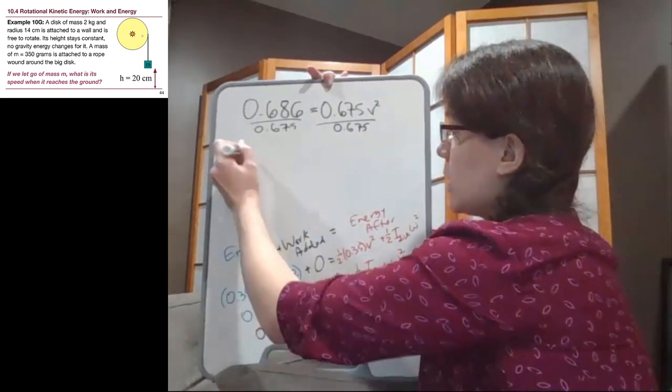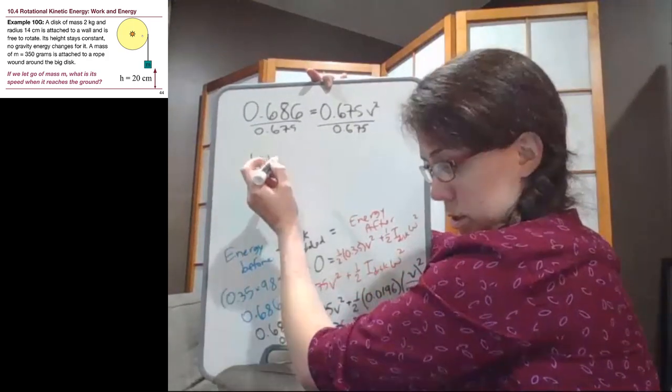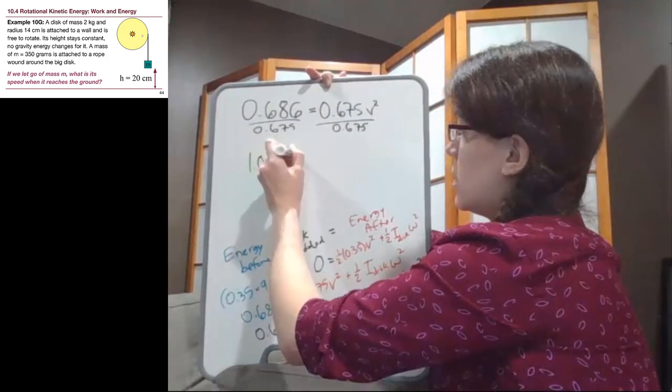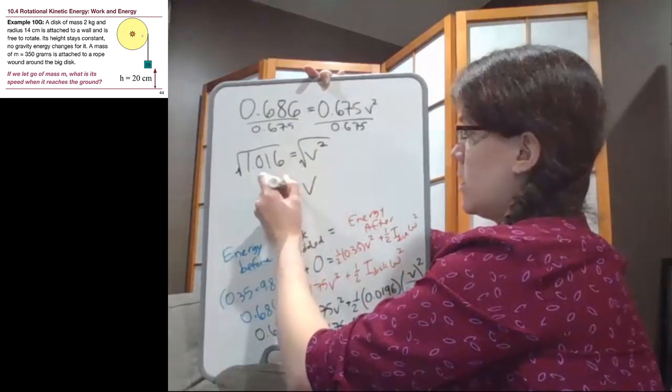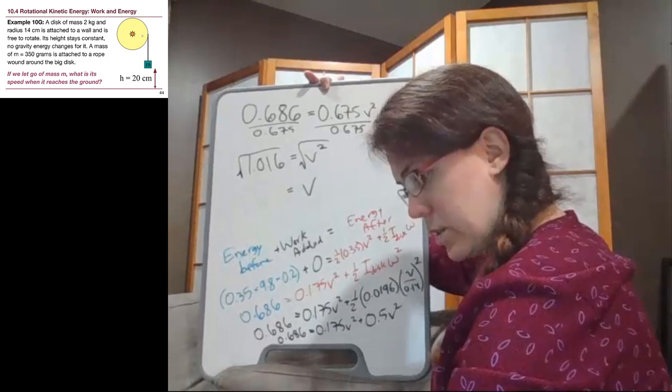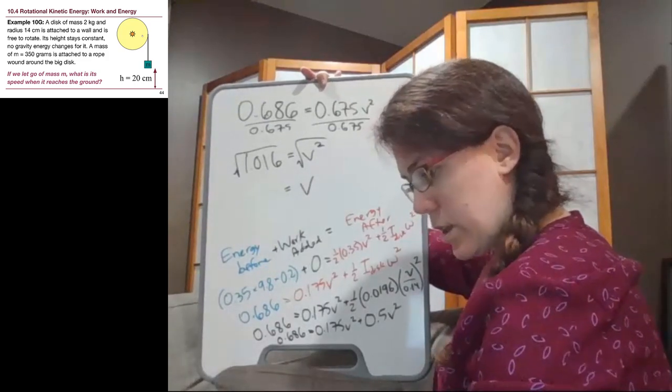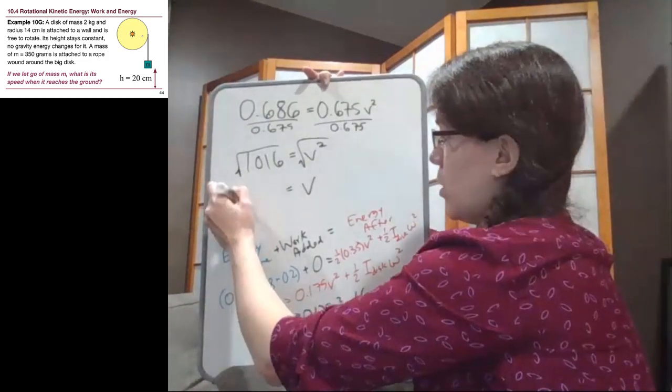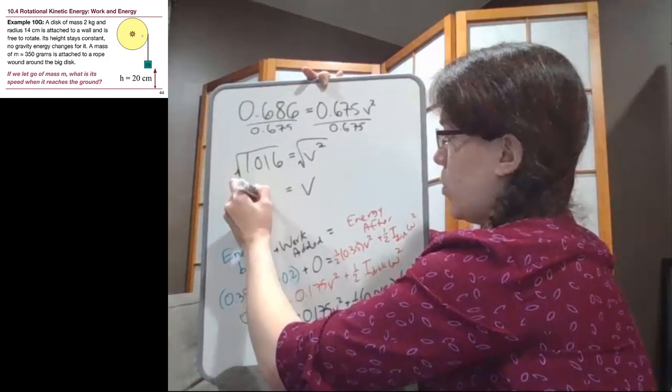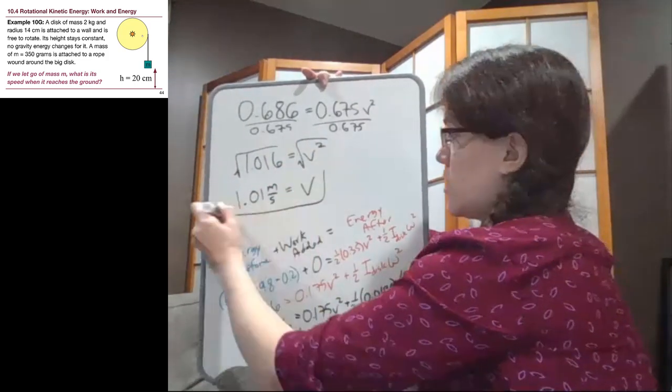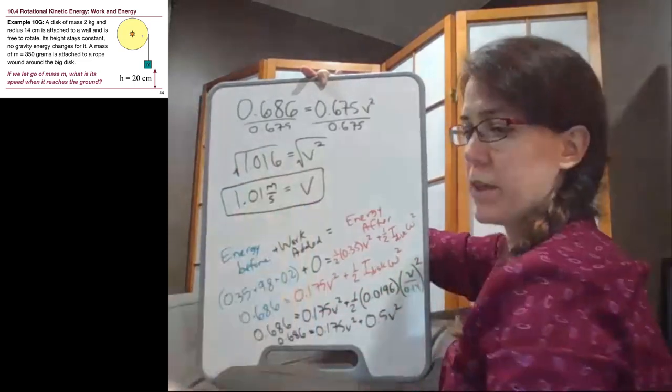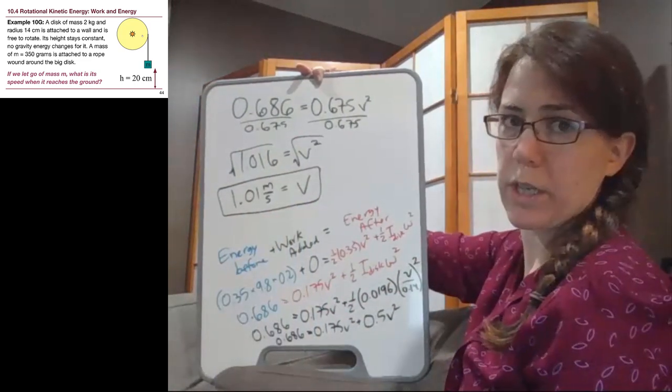And so we get 1.016 equals v squared. We'll take the square root. And it will still come out to be very similar to 1, but now it's 1.008 or 1.01 meters per second. Remember that we do need to take the square root. It is different, but it's close to 1 here.